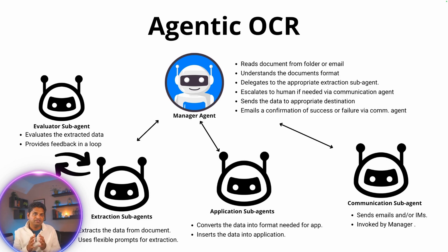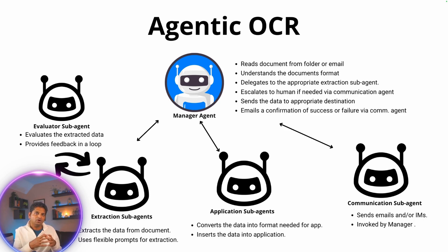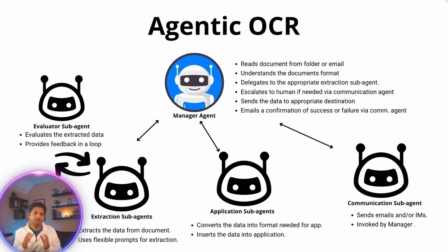Once the manager agent gets the extracted data, it calls the application sub-agent to put the data into the appropriate system, like a CRM or ERP. The application sub-agent also generates a result file indicating success or failure. Based on that, the manager agent calls the communication agent, which sends an email with the result — or flags that someone needs to intervene. This collaborative approach improves extraction while reducing human intervention.